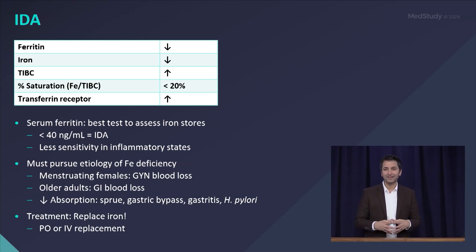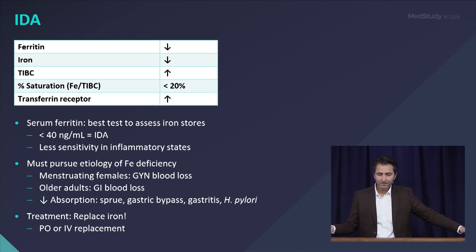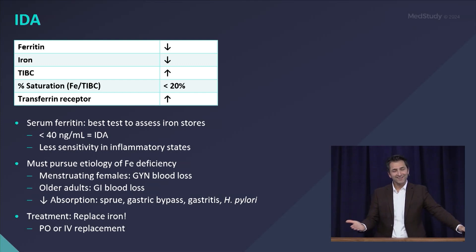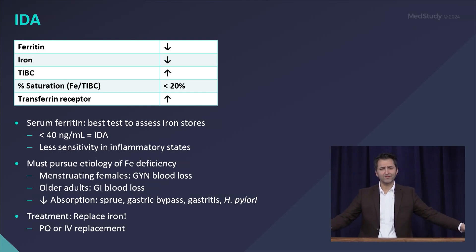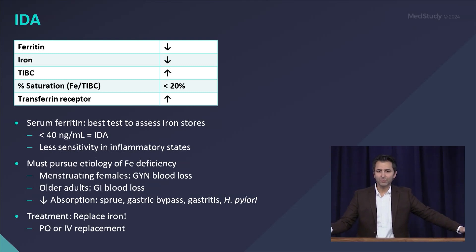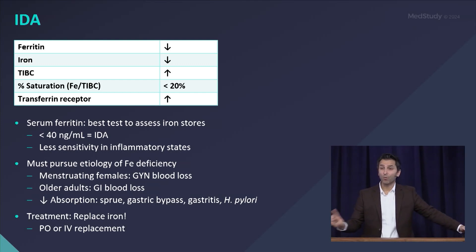Iron deficiency that is not responsive to oral iron therapy should prompt you to think about absorption issues. Once you've done all that, the next step is to treat. Thankfully, this is quite straightforward — you replace iron. In most stable patients, oral iron is the preferred initial method. The optimal dosing is about 65 milligrams of elemental iron; ferrous sulfate is one common preparation, taken once a day or perhaps even every other day.